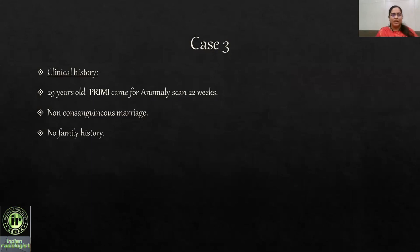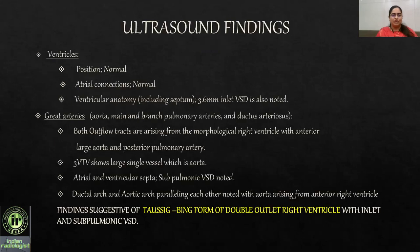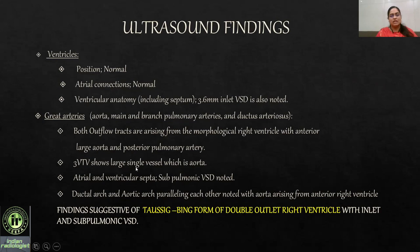Case 3: A 29-year-old primigravida came at 22 weeks for an anomaly scan. Non-consanguineous marriage, no family history. The position of the ventricles was normal with normal atrial connections. Ventricular anatomy showed a 3.6 mm inlet VSD. Both outflow tracts were seen arising from the morphological right ventricle with an anterior large aorta and posterior pulmonary artery. On three-vessel trachea view, a single large vessel — the aorta — was seen. A sub-pulmonic VSD was also identified. Ductal and aortic arches were paralleling, suggesting a Taussig-Bing form of double outlet right ventricle with sub-pulmonic and inlet VSD.